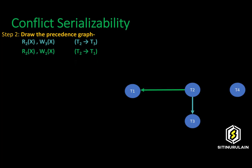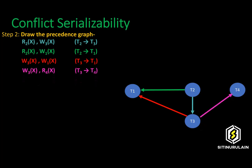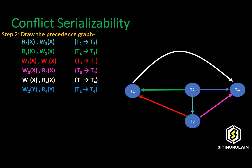In the third operation, we need to create an edge between transaction 3 and transaction 1. In the fourth operation, we need to create an edge between transaction 3 and transaction 4. In the fifth operation, we need to create an edge between transaction 1 and transaction 4. In the sixth operation, we need to create an edge between transaction 2 and transaction 4.